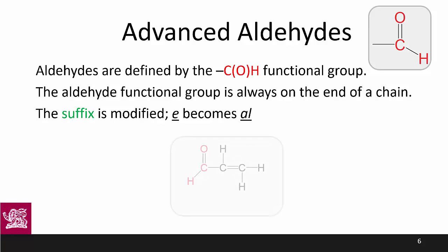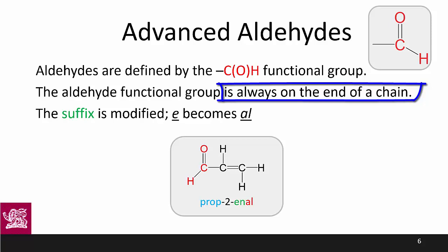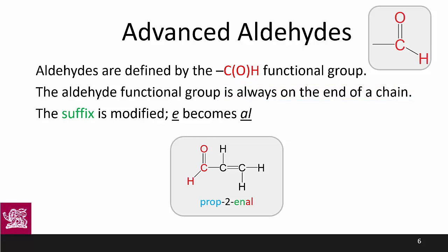Moving on to our advanced aldehydes now. This example is called prop-2-en-al. We don't need to number where the aldehyde is because we know the aldehyde has to be on the end of the chain, and this dictates the numbering. If this were simply an alkene we would number from the right-hand side to minimize the double bond number, but the aldehyde takes precedence — the alkene must start on carbon two and move through to carbon three.